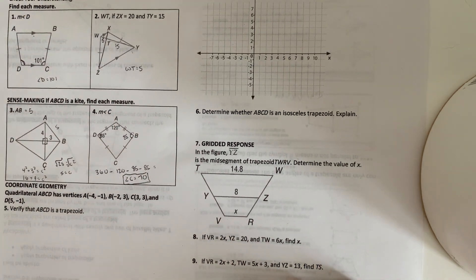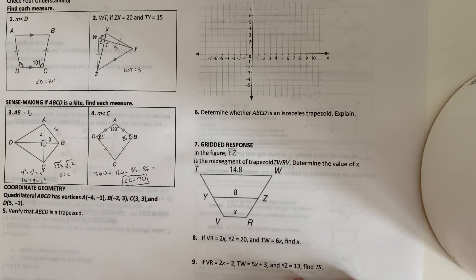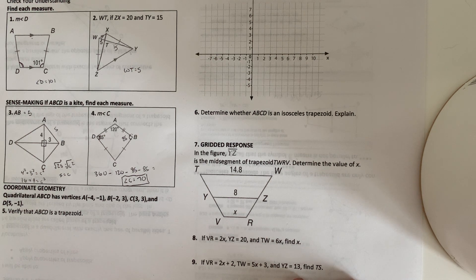Okay. Now we got some graphing a couple here. Quadrilateral ABCD has vertices at negative 4, negative 1, negative 2, 3, 3, 3, and 5, negative 1. Verify that ABCD is a trapezoid.